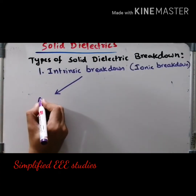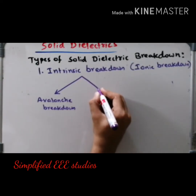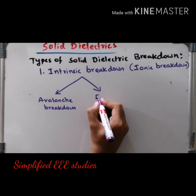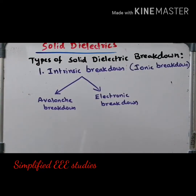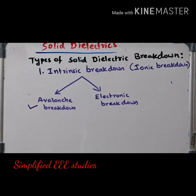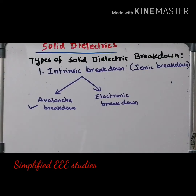The first one is known as avalanche breakdown. Avalanche breakdown is 100% similar to gaseous dielectric breakdown. All the steps are common: formation of avalanche, then space charge, then creation of extra electric field, and finally causing the dielectric breakdown. Please refer to my previous videos for more information. The concept is applicable for solid dielectric material as well as gaseous dielectric material.